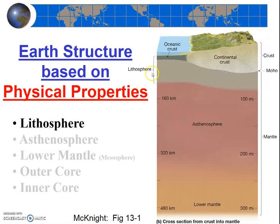In terms of its physical properties, the lithosphere behaves as a solid, rigid rock—you don't see pools of magma when you go hiking. The prefix 'litho' means rock. Notably, the lithosphere contains all of the crust and the top of the mantle.